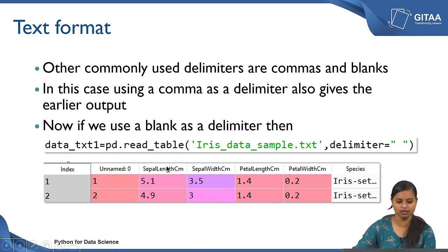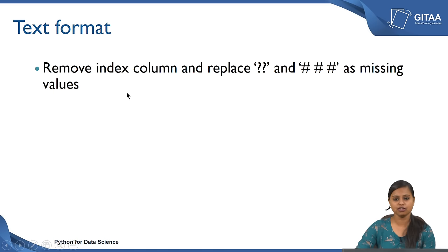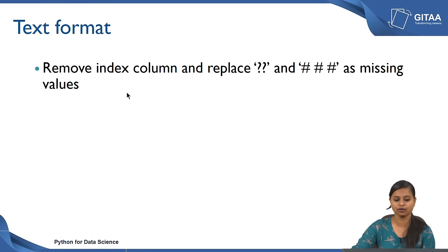Now, if you see here, all the records have been separated into cells by using the blank delimiter. In this case also you have to remove the index column and replace all the question marks and hash as missing values — I have not shown it here, but you can try that using the same format which you used for CSV and Excel formats.